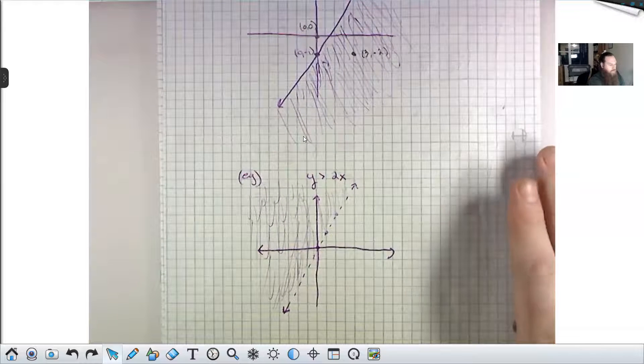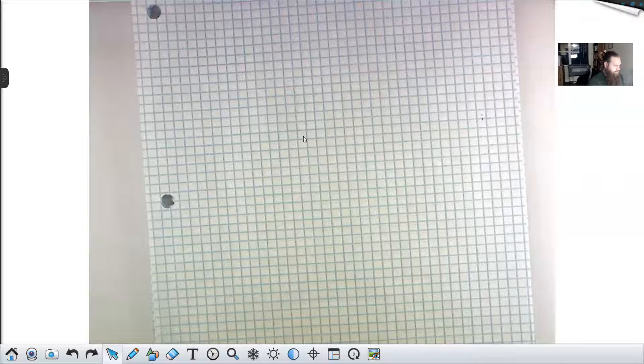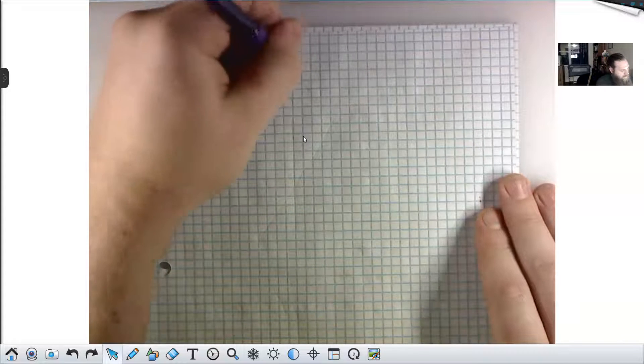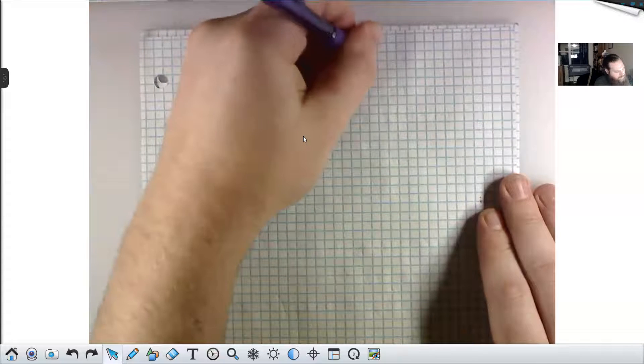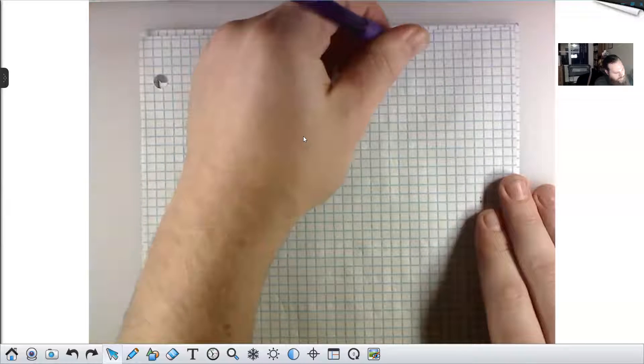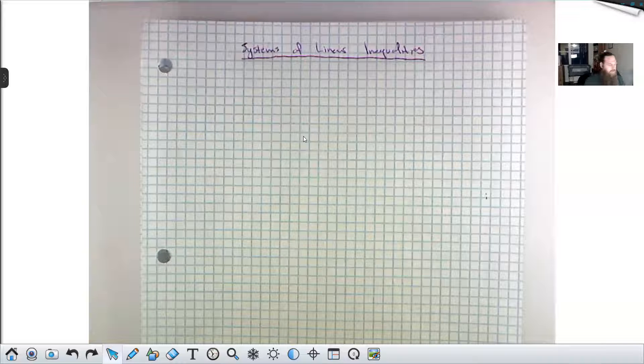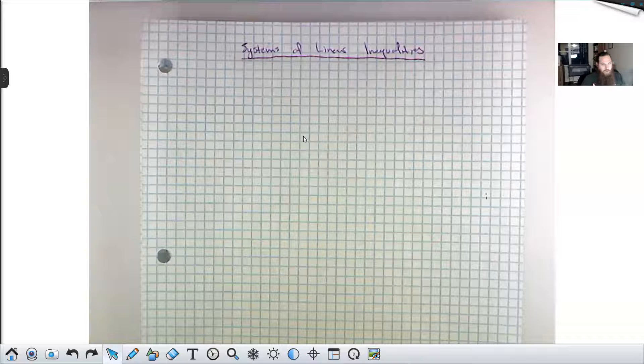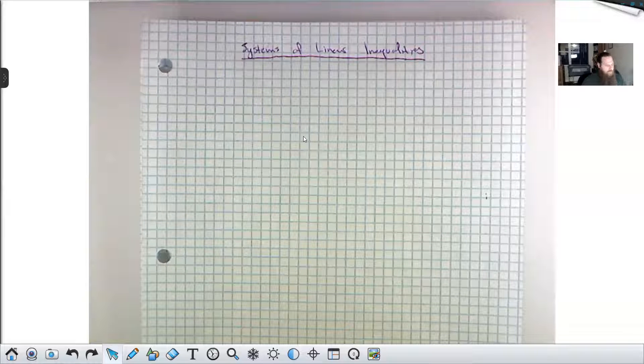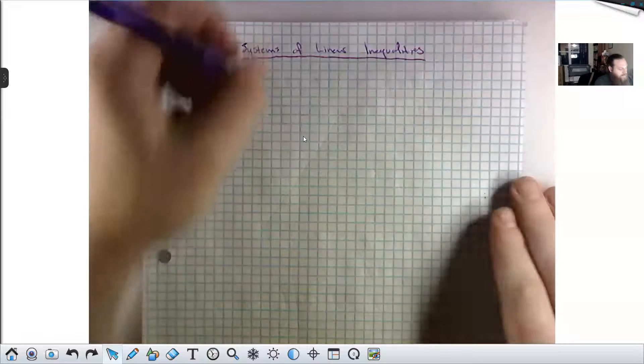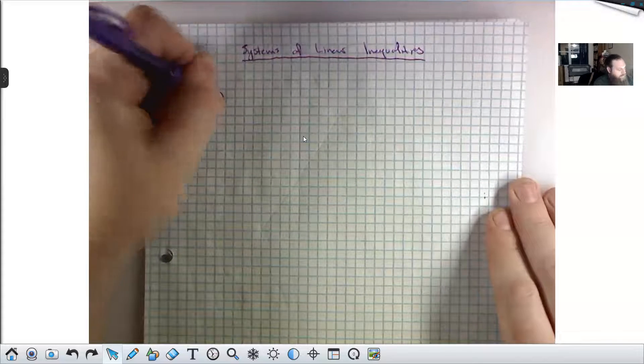But what about a system of linear inequalities? Well, a system of linear inequalities is two or more linear inequalities. The solution to the system should be an ordered pair that solves both things at once. Remember, that's what a system is. The solution to a system is whatever ordered pairs, whatever expressions in those variables simultaneously satisfy whatever the objects are here, inequalities.